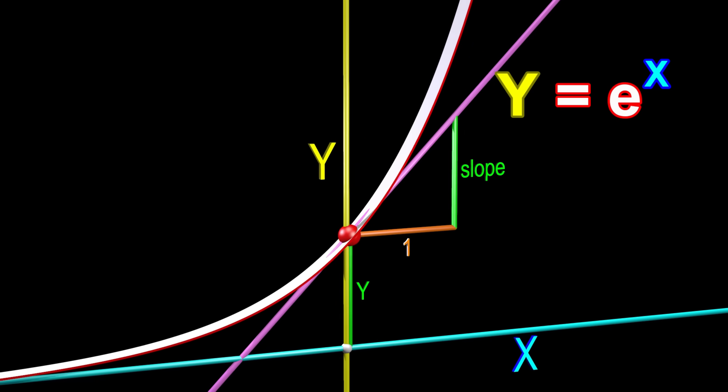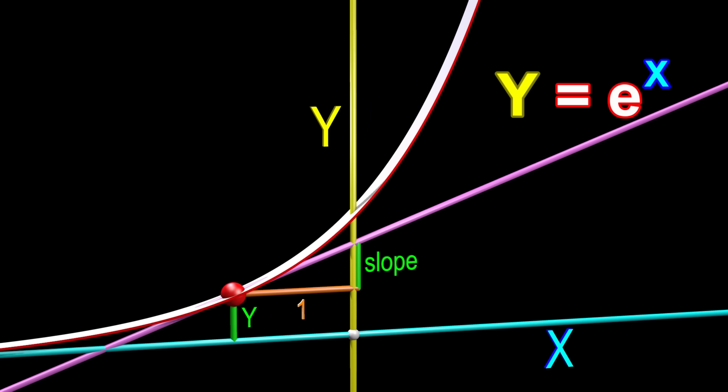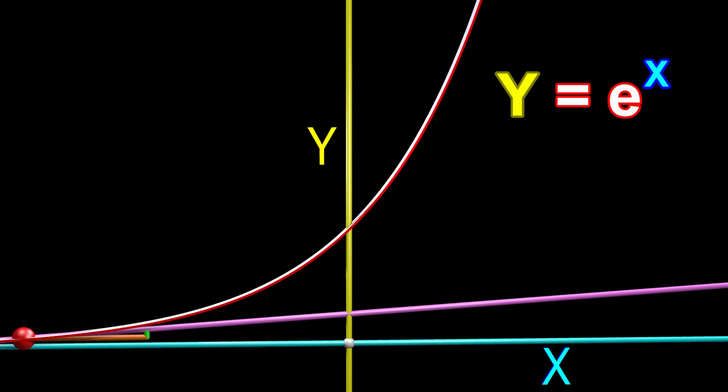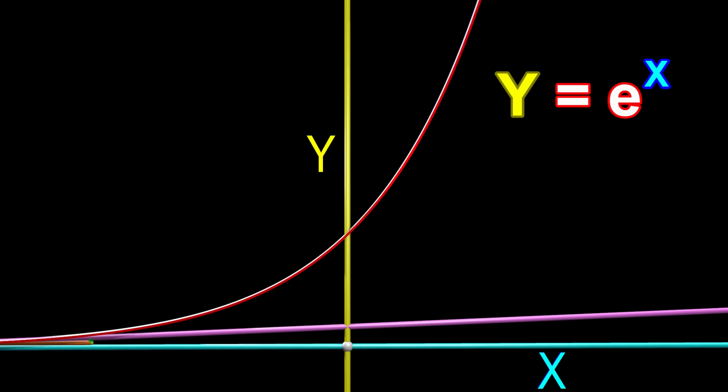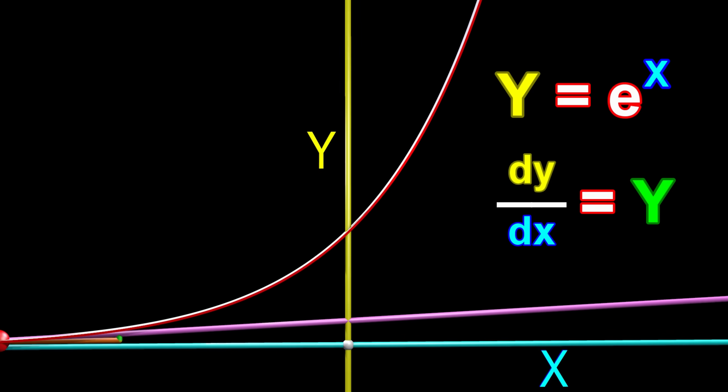Another way to say that the slope is equal to y is to say that dy divided by dx is equal to y.